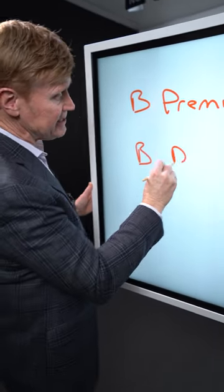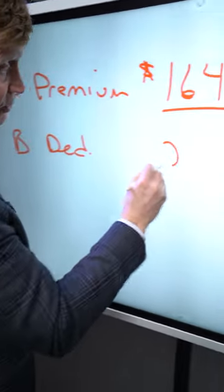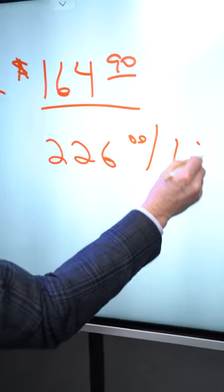Secondly, the Medicare Part B deductible. That deductible is going down as well to $226, and that is one time a year in which you meet that deductible.